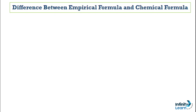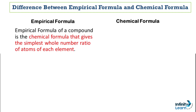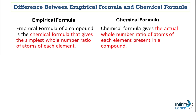Finally, what is the difference between empirical formula and chemical formula? The empirical formula of a compound gives the simplest whole number ratio of atoms. Whereas the chemical formula gives the actual whole number ratio of atoms of elements present in a compound. Let's understand this more carefully with examples — the same examples used earlier.